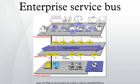An enterprise service bus is a software architecture model used for designing and implementing communication between mutually interacting software applications in a service-oriented architecture. As a software architectural model for distributed computing, it is a speciality variant of the more general client-server model and promotes agility and flexibility with regards to communication between applications. Its primary use is enterprise application integration of heterogeneous and complex landscapes.